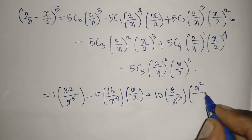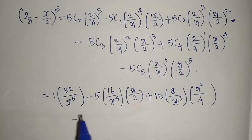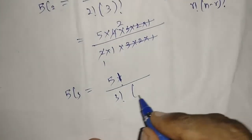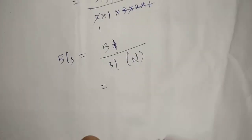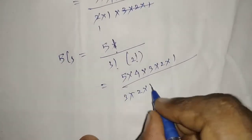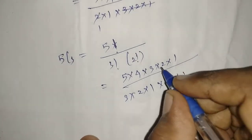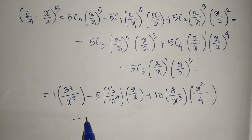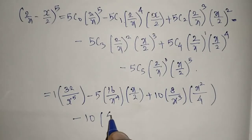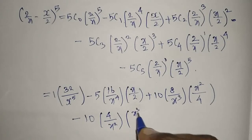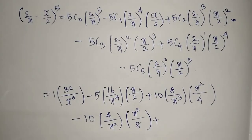For 5C3: 5! / (3! * 2!) = (5*4*3*2*1) / (3*2*1 * 2*1) = 10. So 5C3 = 10, multiplied by (2/x)^2 = 4/x^2 and (x/2)^3 = x^3/8.